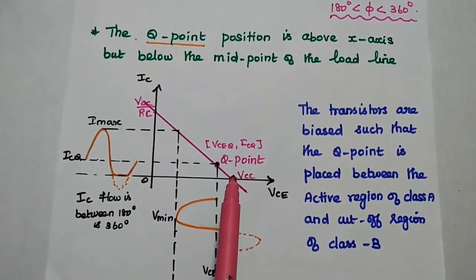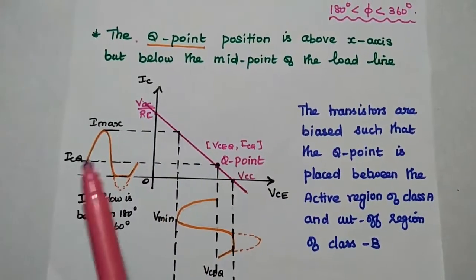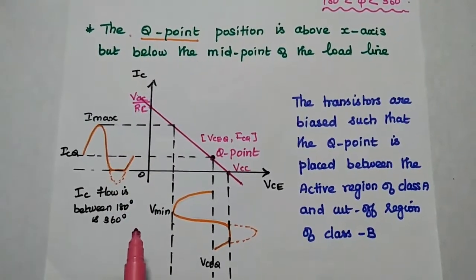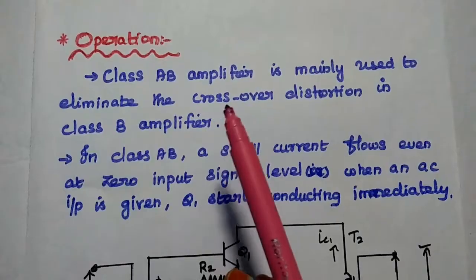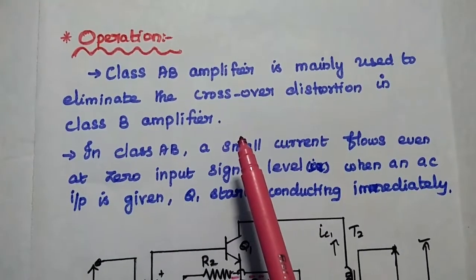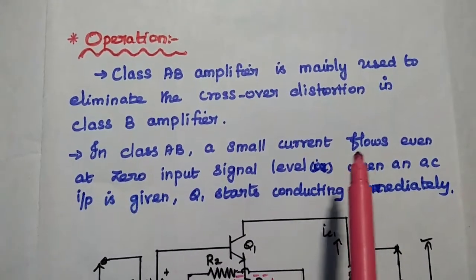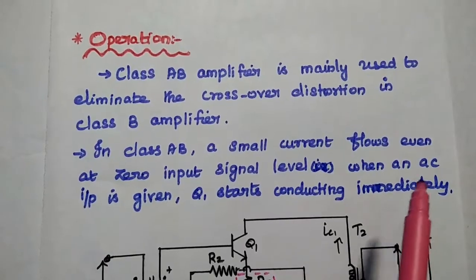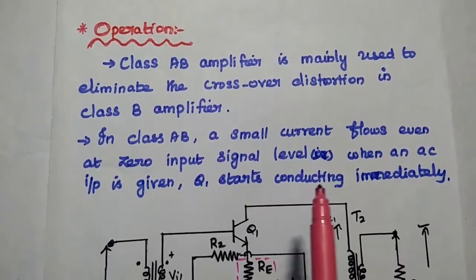We can use Class AB amplifier to overcome the drawback of Class B amplifier. We can get the collector current between 180 degrees and 360 degrees. Class AB amplifier is mainly used to eliminate the crossover distortion in Class B amplifier. For that, we ensure that in Class AB amplifier, a small amount of current flows even at zero input signal. Also, whenever an AC input signal is given, the transistor starts conducting immediately, and hence we can eliminate the crossover distortion.